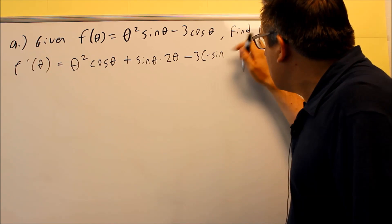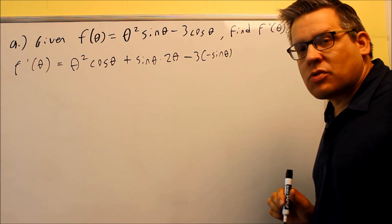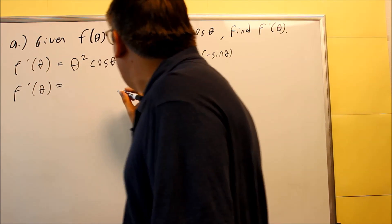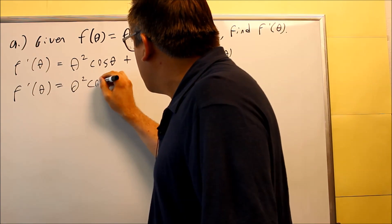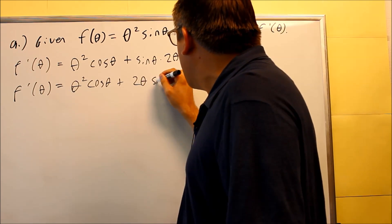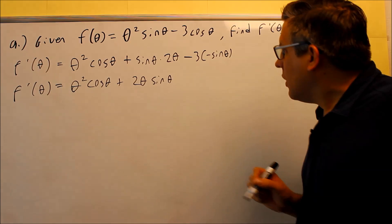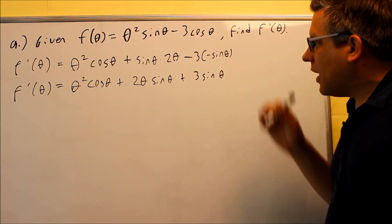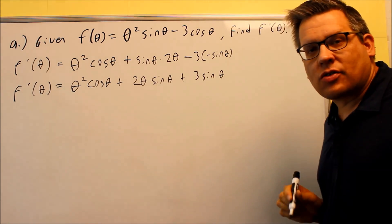That's the definition we talked about at the beginning of this section. The last thing we're going to do is just some simplifying. The order doesn't really matter in which you write these, but we'll put the two theta first because usually a single variable comes in front of the trig function. This gives us plus three sine theta, and that's your final answer.